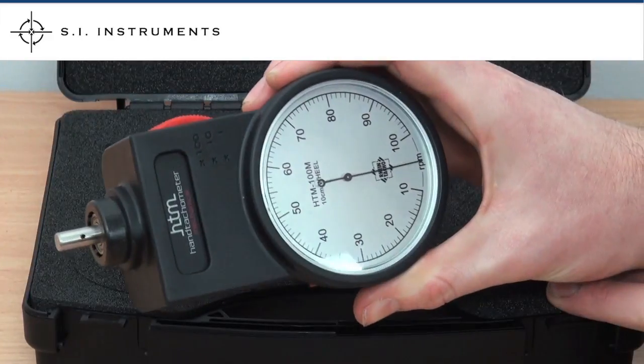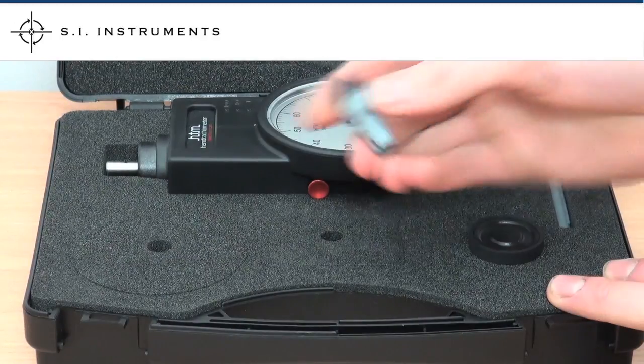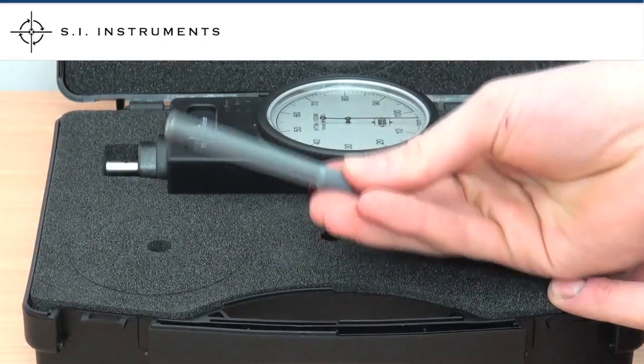In the kit you will receive the tachometer and four attachments: Wheel, Measuring Cone, Inverted Measuring Cone and Extension Shaft.